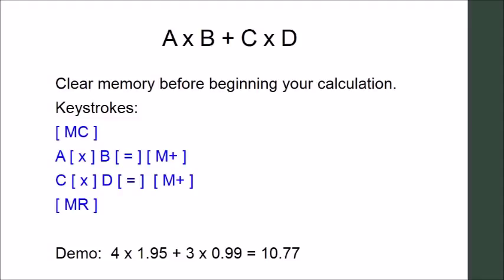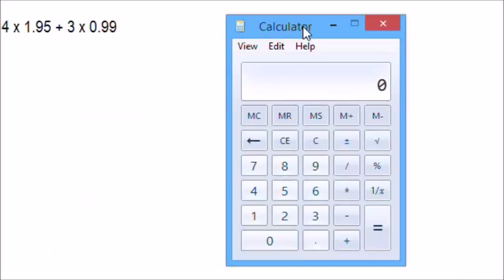Please remember to clear memory every time you start a problem. For example, let's calculate 4 times 1.95 plus 3 times 0.099. We always start by clearing memory, memory clear, or pressing the MRC button twice. Then let's deal with the 4 times 1.95 portion first. Hit equals, and we're going to add this to memory.